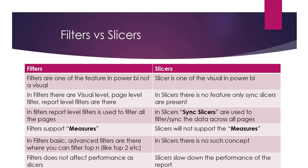Filters are three types: visual level, page level, and report level. There is no such concept in slicers — only the slicer itself exists. In filters, report level filters are used to filter all the pages. One report level filter can be used to filter all pages. But in slicers, there is no equivalent cross-page filter option. That is the difference.